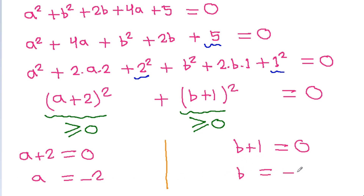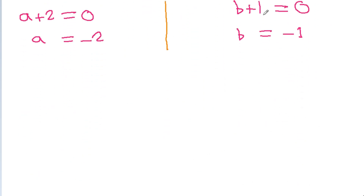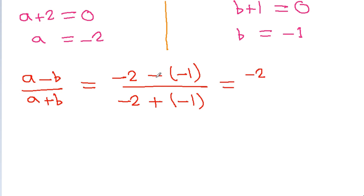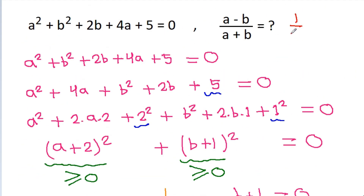We have to find the value of a minus b by a plus b. Substituting, it is minus 2 minus (minus 1), divided by minus 2 plus (minus 1), which gives minus 1 divided by minus 3, or 1 by 3. So the answer is equal to 1 by 3.